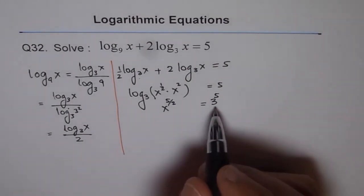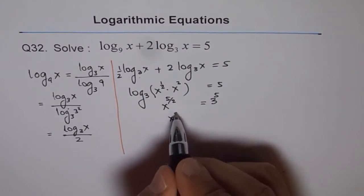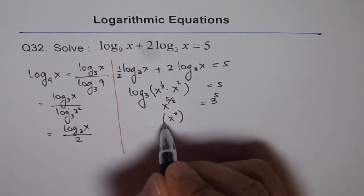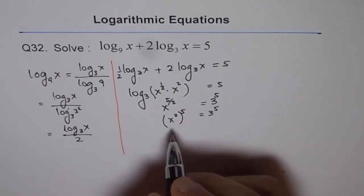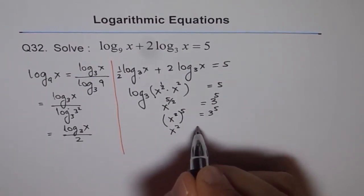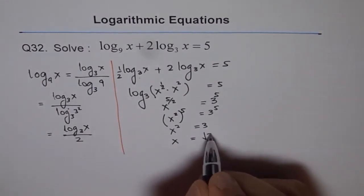If we compare the powers, we can write this as x to the one-half to the power of 5 equals 3 to the power of 5. That means x to the one-half equals 3, so x squared equals 3, or x equals square root of 3.